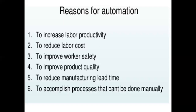The objectives of automation are to increase labor productivity, reduce labor cost, improve worker safety, improve product quality, and reduce manufacturing lead time (MLT). MLT is defined as the overall time taken for converting a raw material into a finished product. As a production manager, one always aims to minimize the MLT. A final objective is to accomplish processes that cannot be done manually.